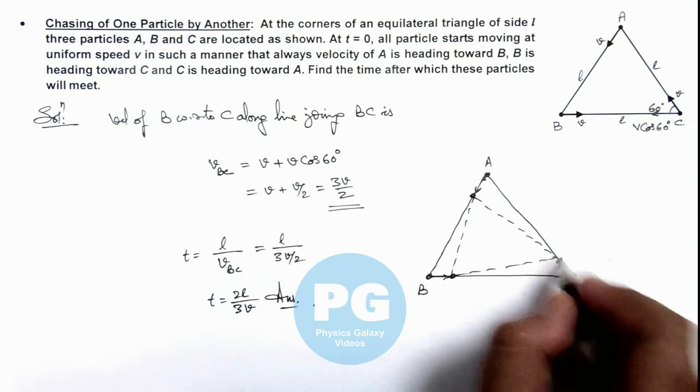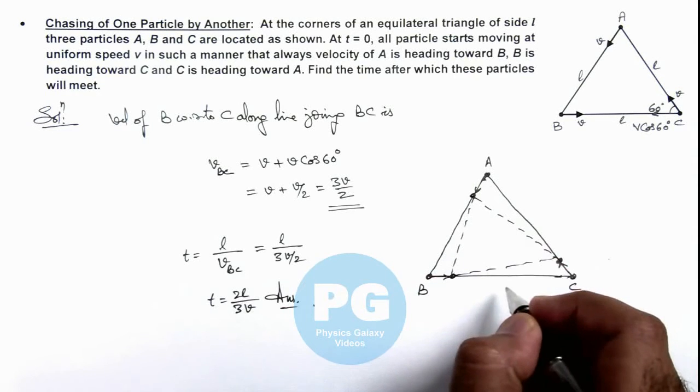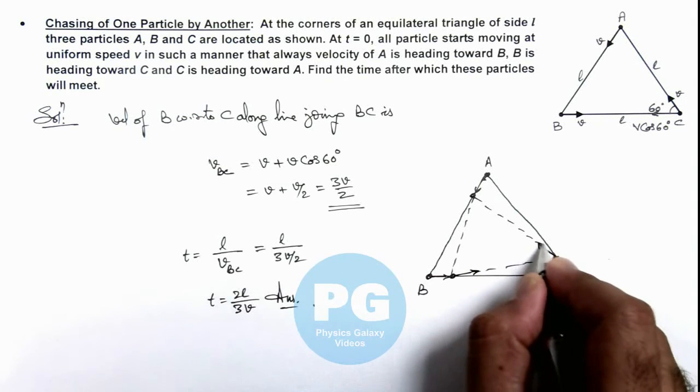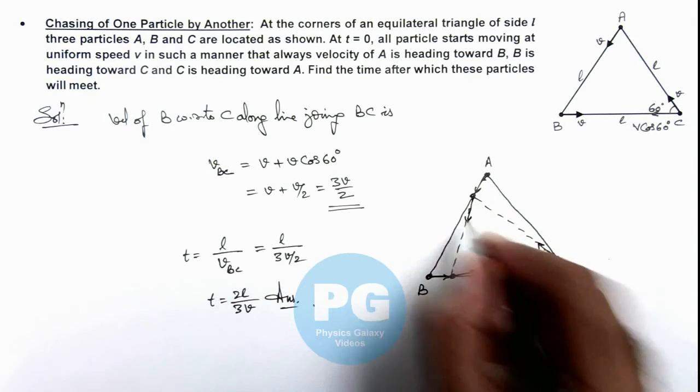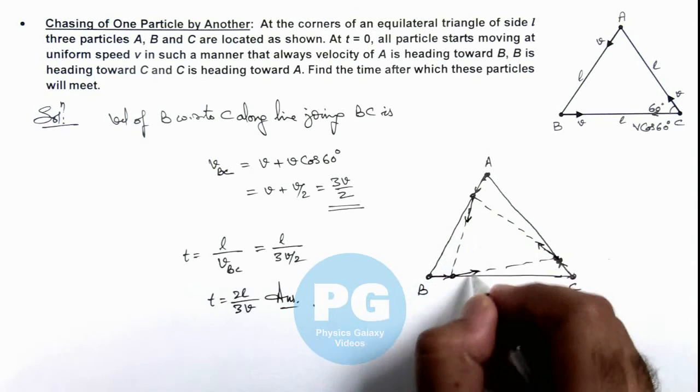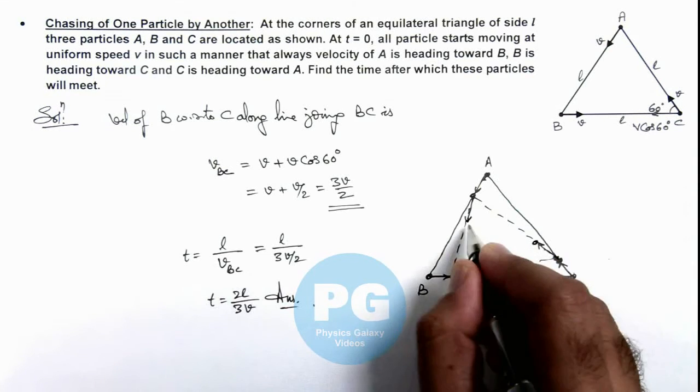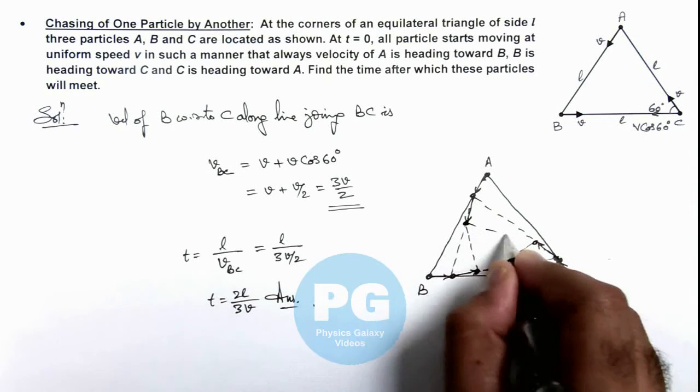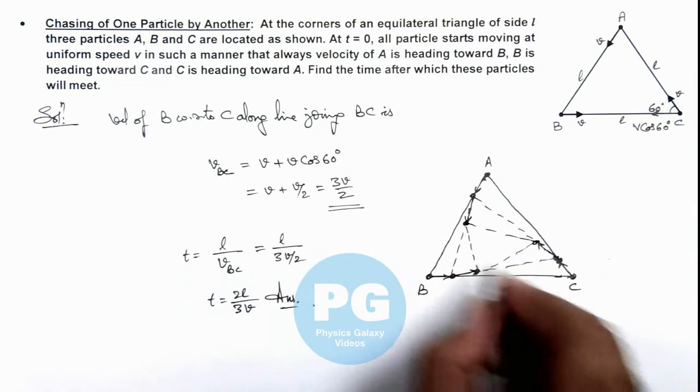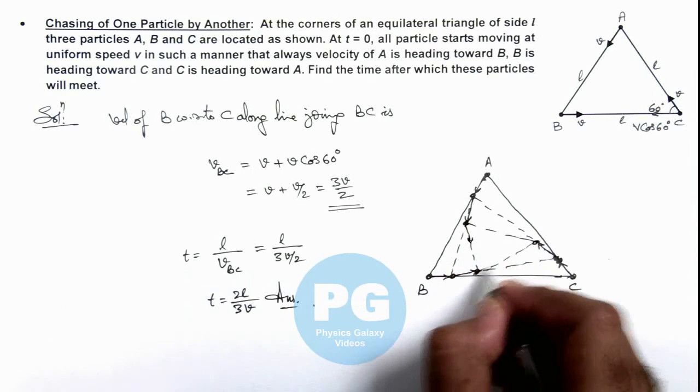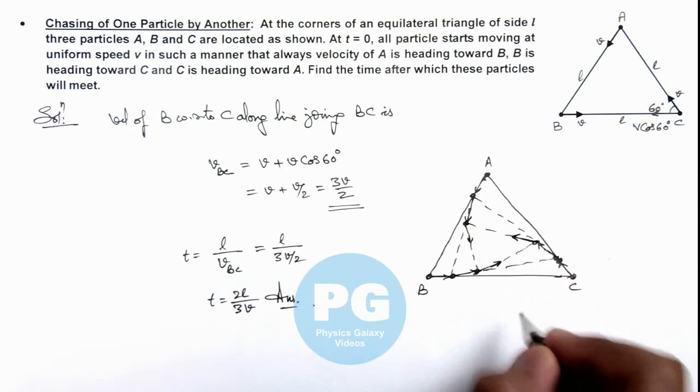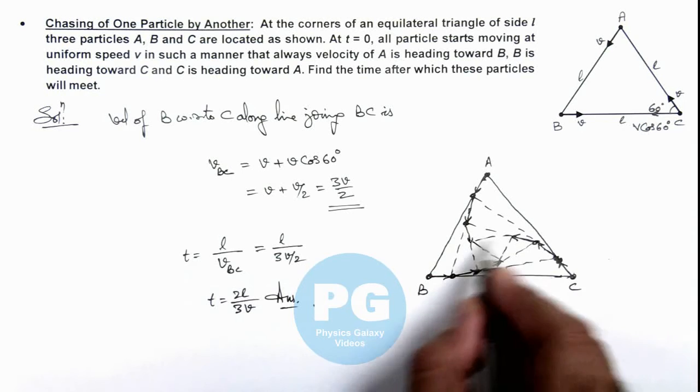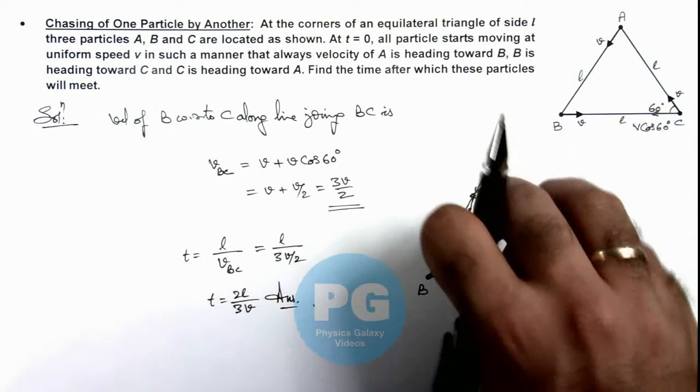But the triangle is slightly reduced in size. Now the direction of velocity of B is heading toward C, C is heading toward A, and A is heading toward B. So again, after some time, if we again join the positions of particles A, B, and C, the triangle is further reduced and the new direction of velocities are in this direction. So we can see continually the size of triangle is getting reduced and it is also rotating.